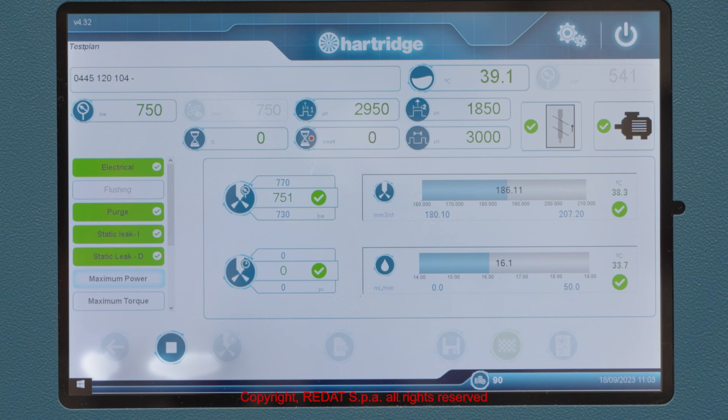At the end of the tests, the green or red colors indicate positive or negative results. By selecting each test, all the details can be viewed on the screen.